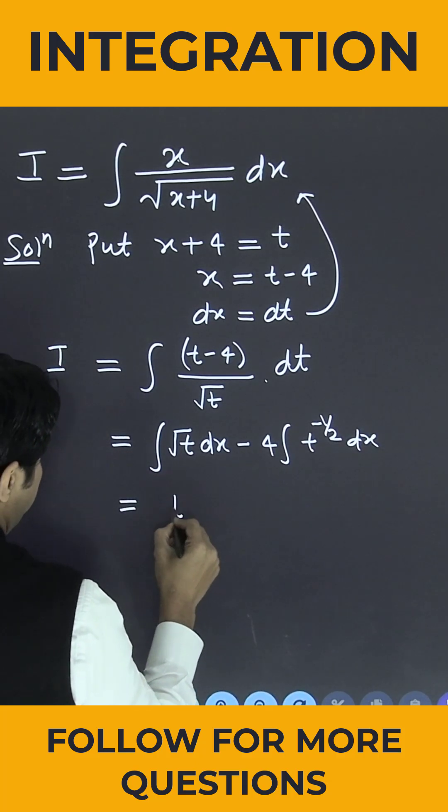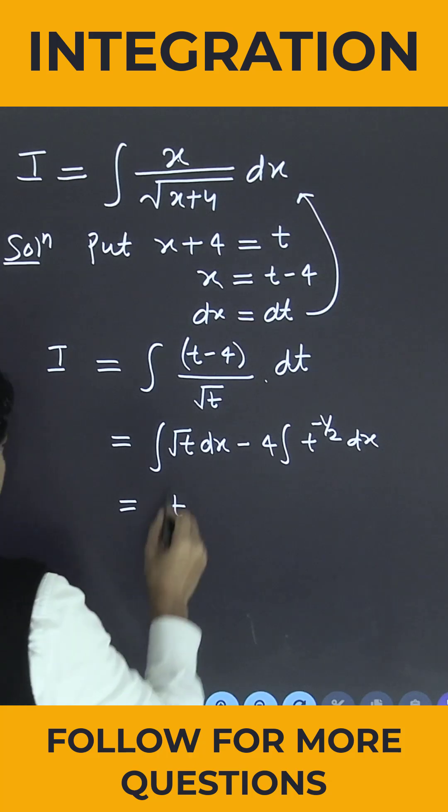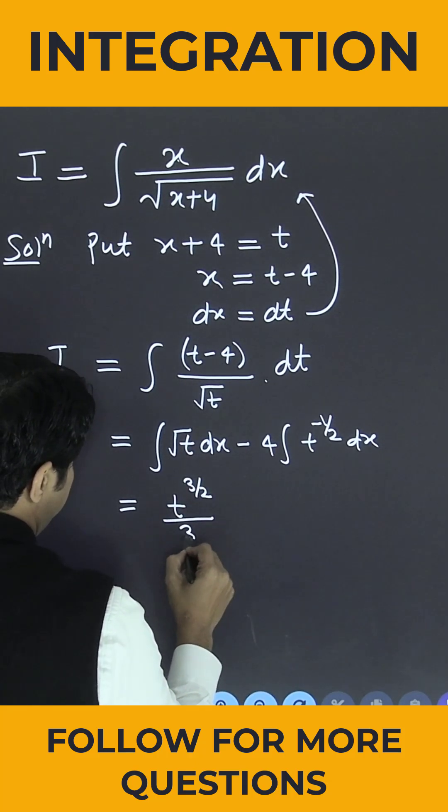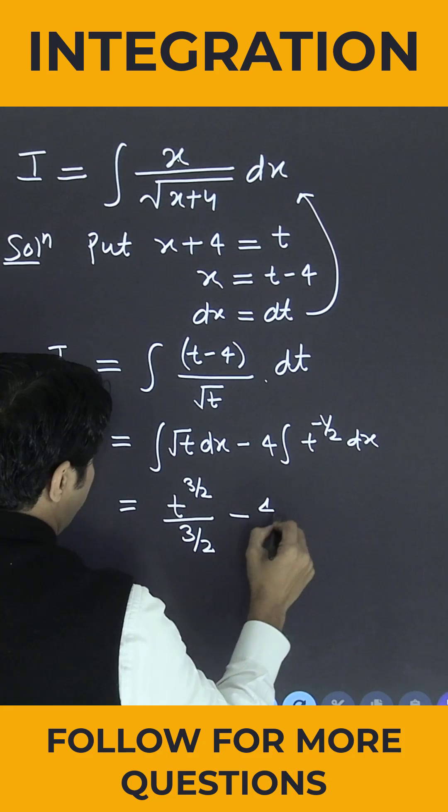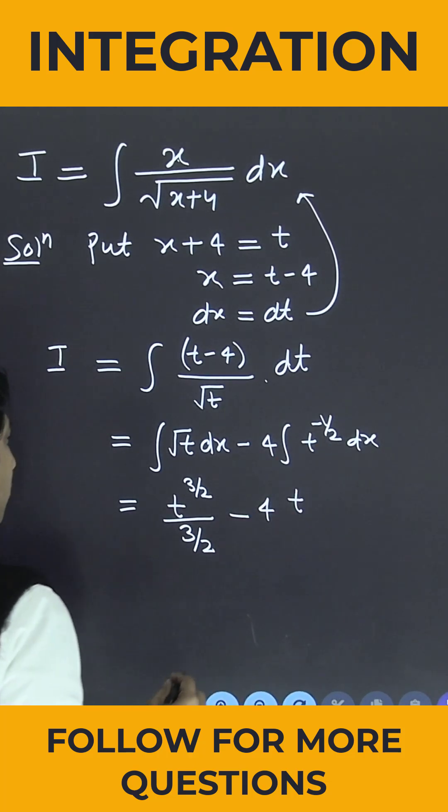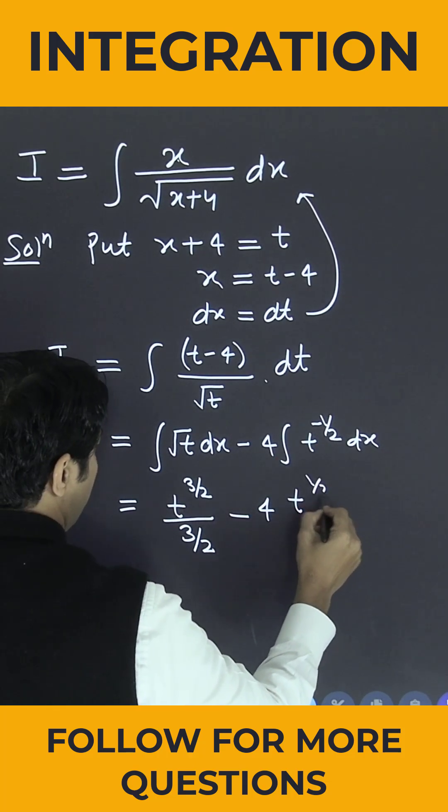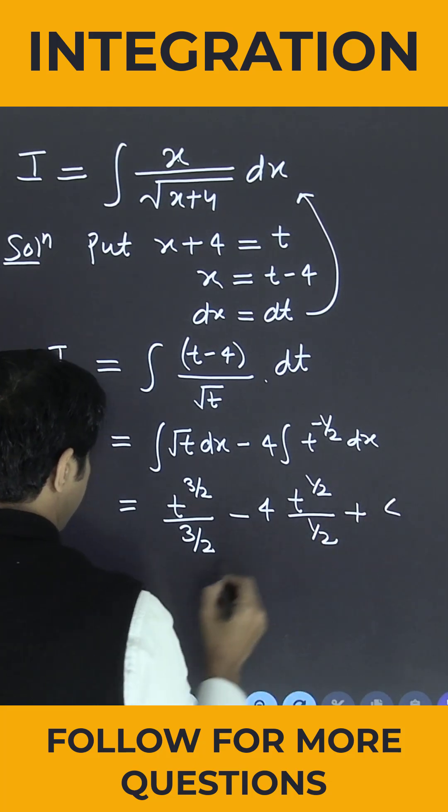This is t to the power 1 by 2. If I integrate, it becomes 3 by 2 divided by 3 by 2 minus 4. It becomes minus 1 by 2 plus 1, which is 1 by 2 divided by 1 by 2 plus c.